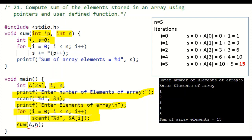i is the counter. In a loop with initial value equal to 0 and counting up to n, the number of elements, we perform the sum operation where each individual element is added. The statement is s plus equal to star p plus plus. This adds each and every element of the array, and p plus plus is a post-increment operation of the pointer.